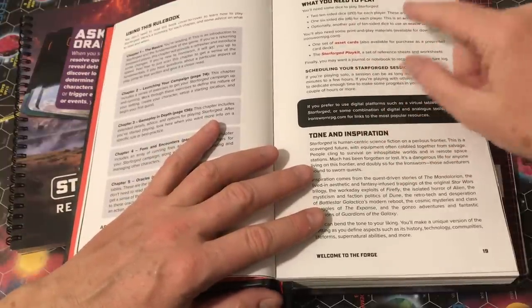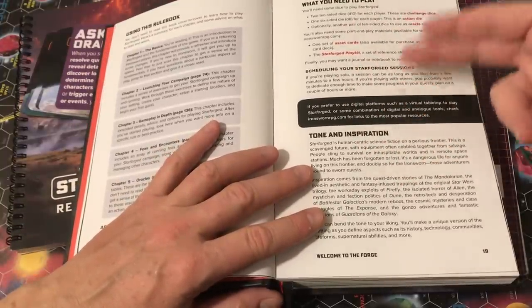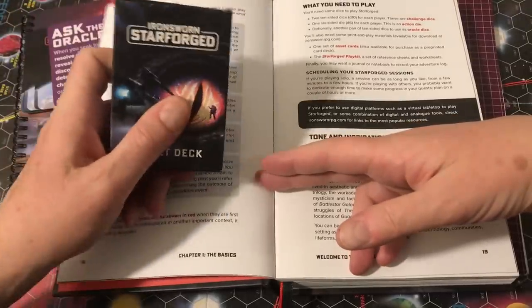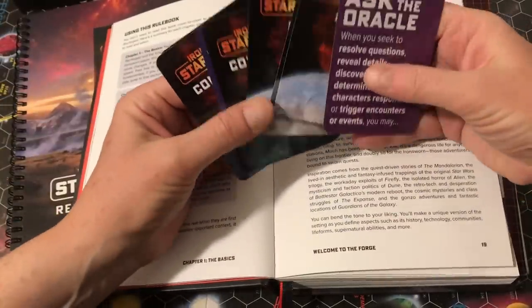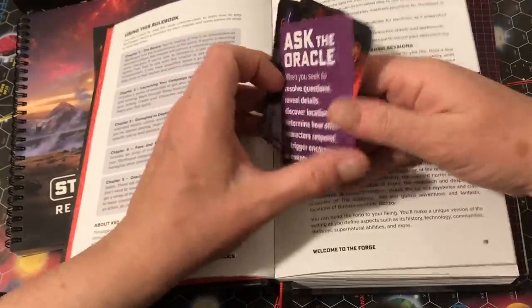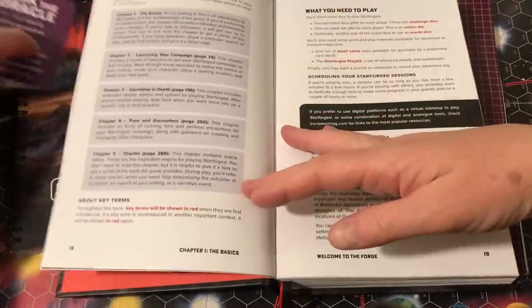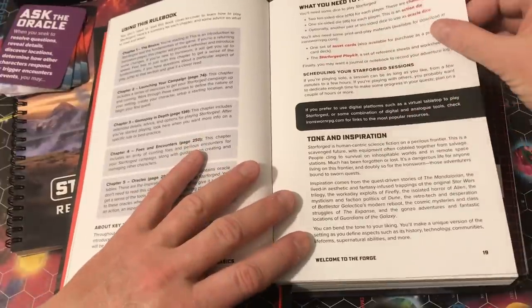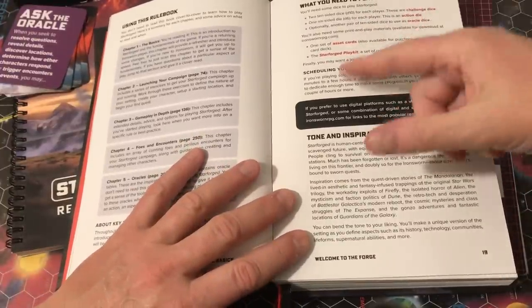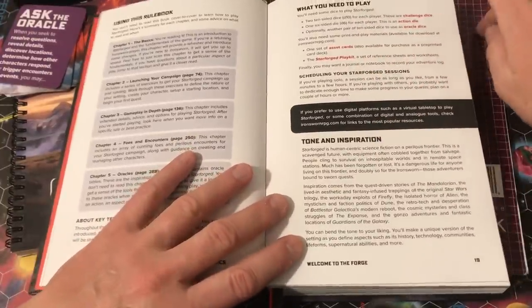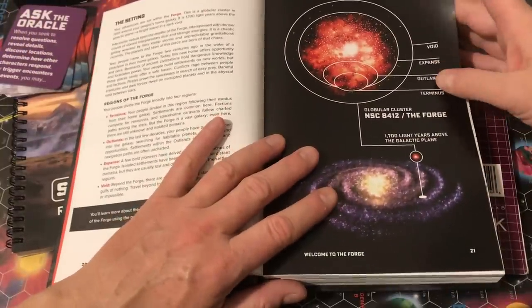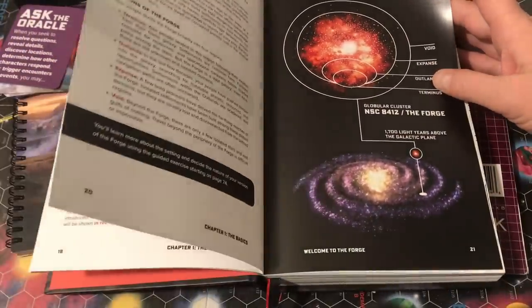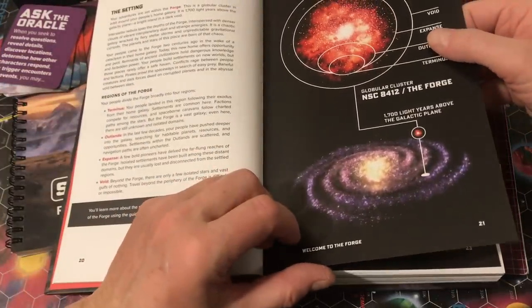What you need to play is some dice, you do need the asset cards for this game, and I believe they're available as a print and play, as well as the physical copy here that I have. And these cards here are my character cards. And you do need reference sheets and worksheets. You'll see that I did not use the pre-printed reference sheets, and I didn't do that because I like to have my character sheet in the same notebook.